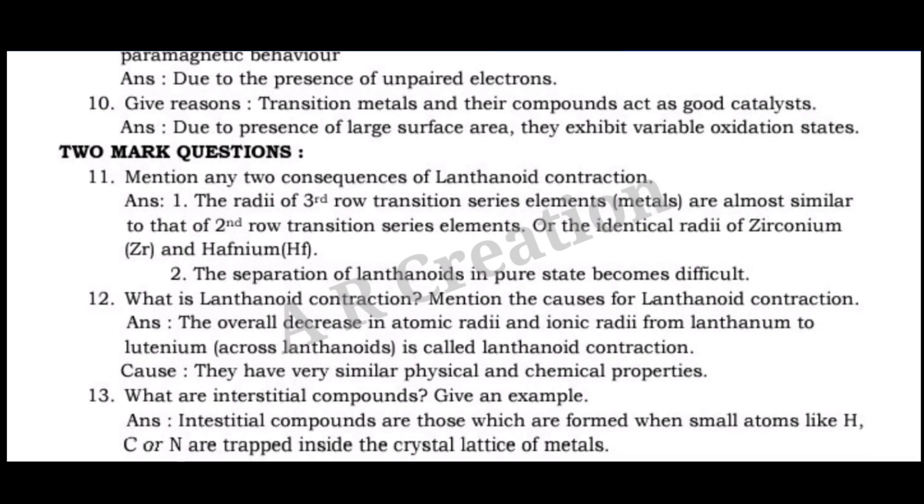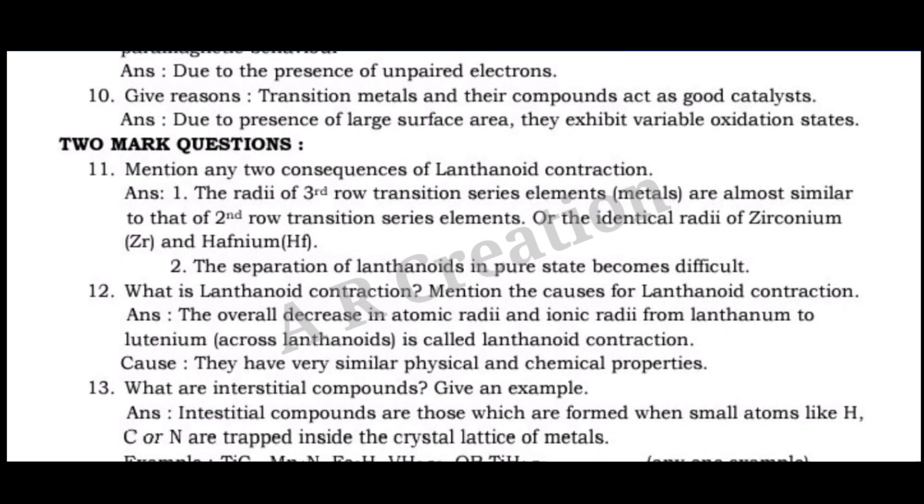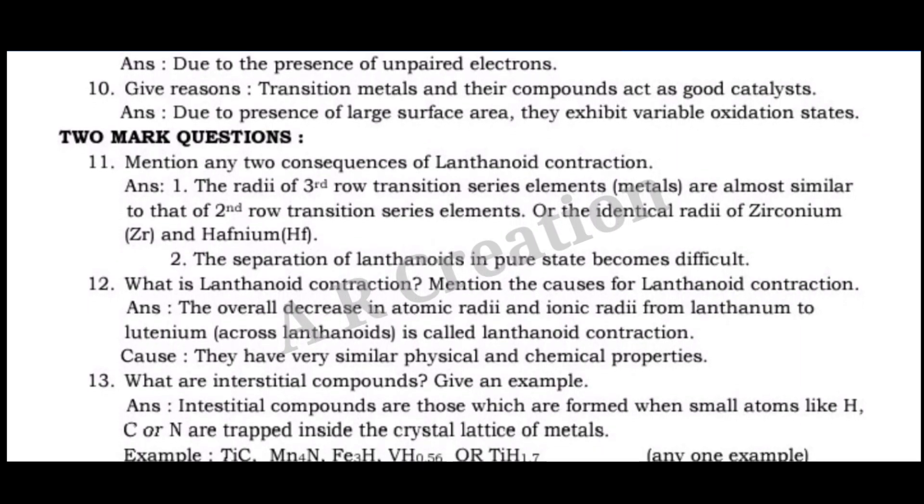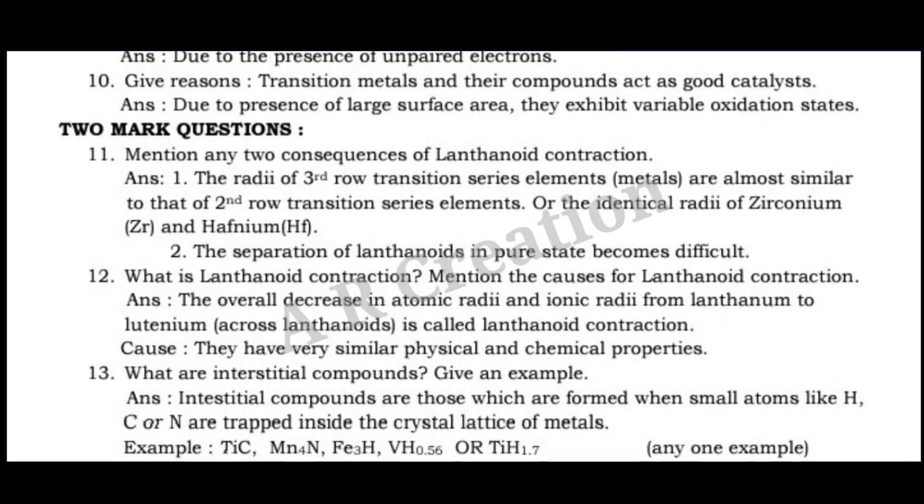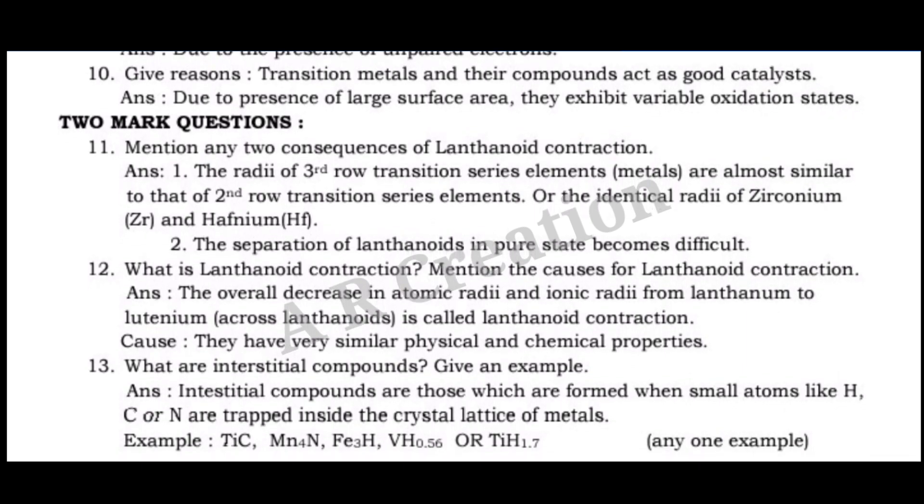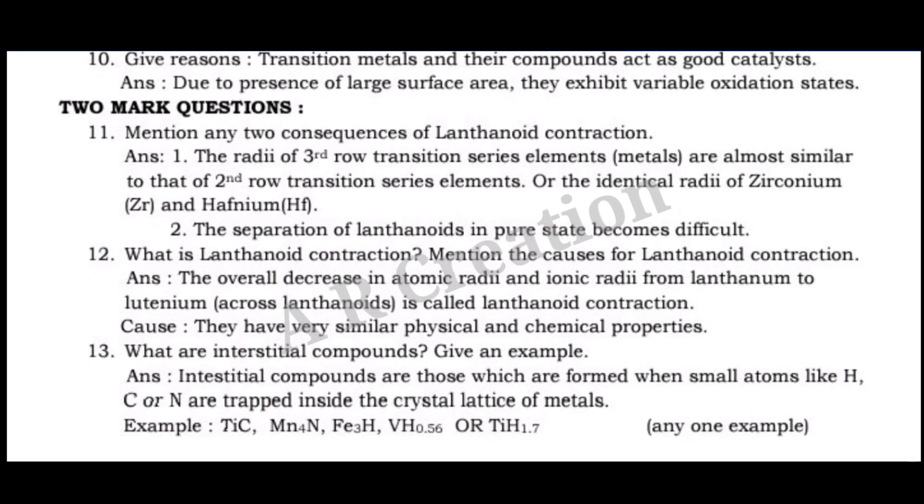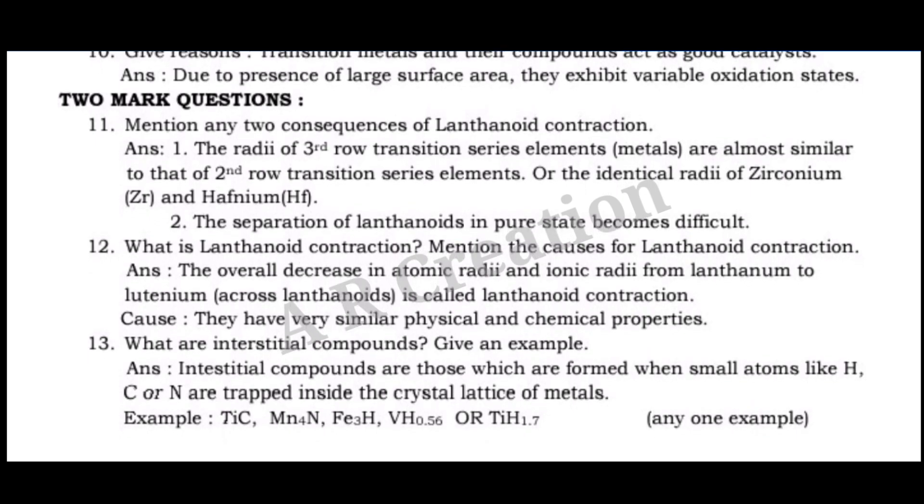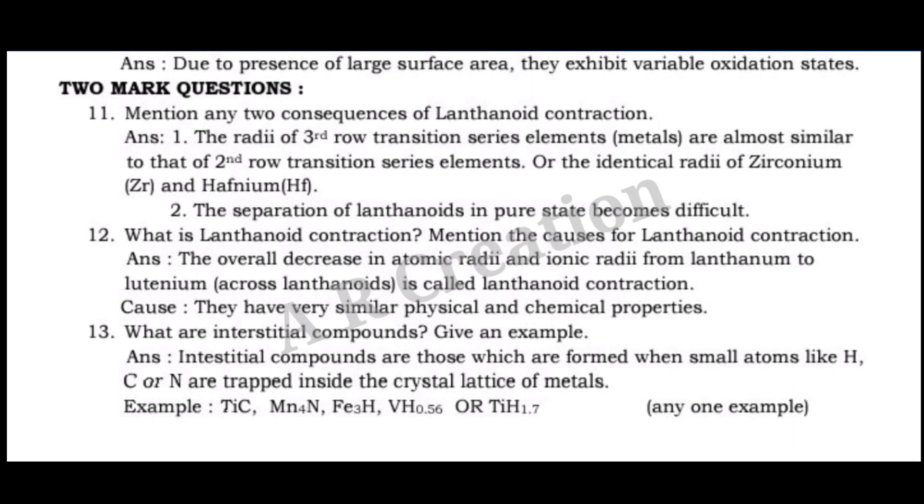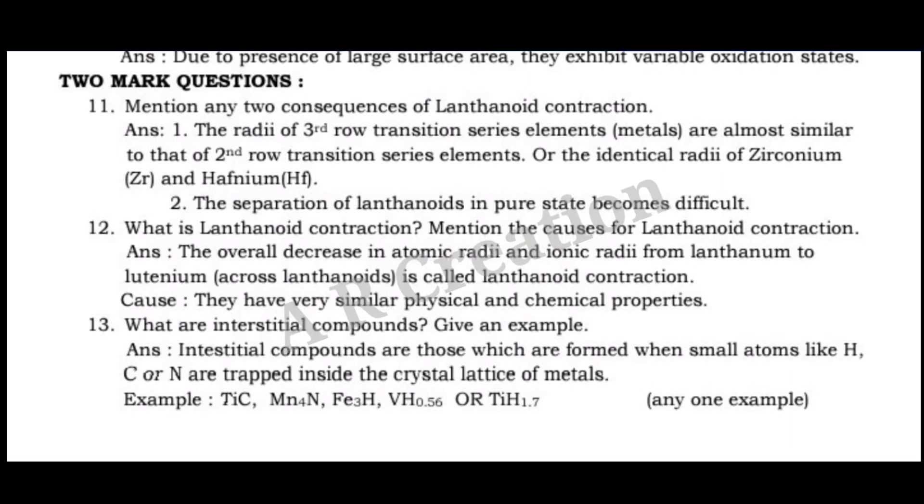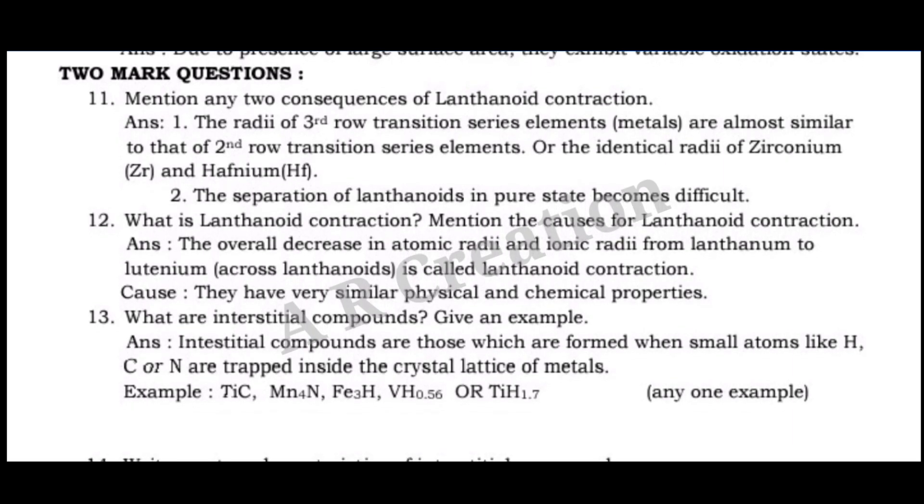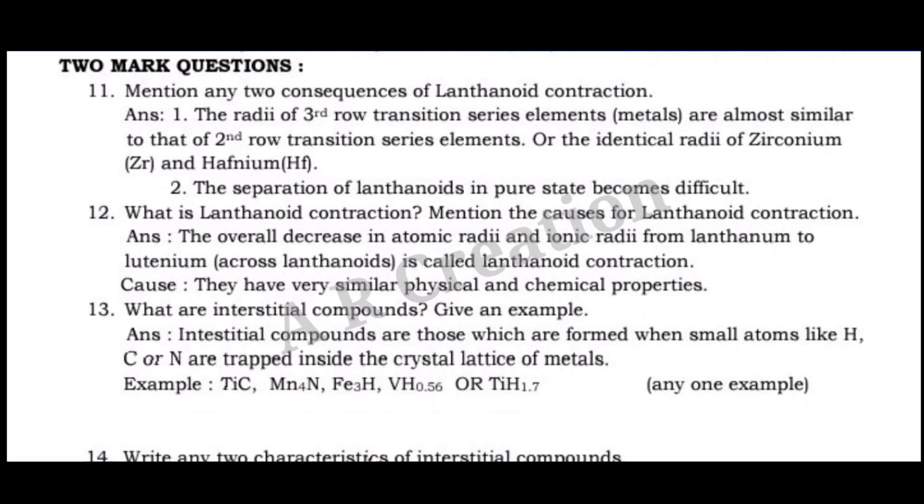Two mark questions. Question 11. Mention any two consequences of lanthanoid contraction. Answer: 1. The radii of third row transition series elements (metals) are almost similar to that of second row transition series elements. Or the identical radii of zirconium (Zr) and hafnium (Hf). 2. The separation of lanthanoids in pure state becomes difficult.